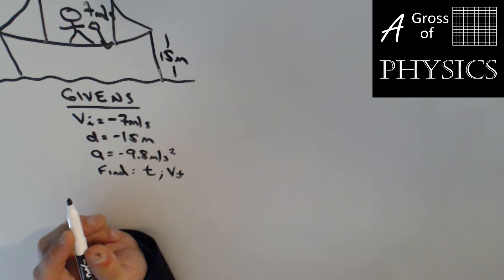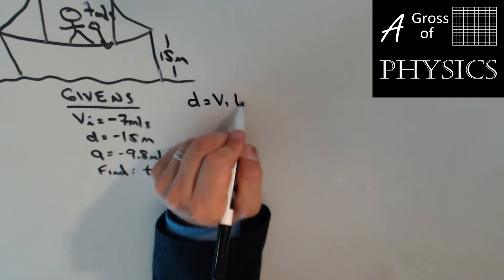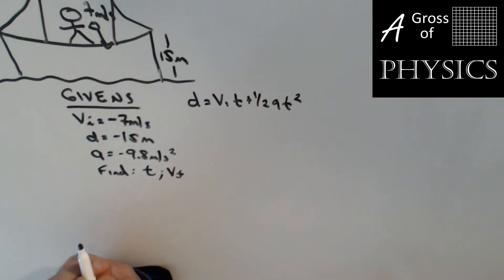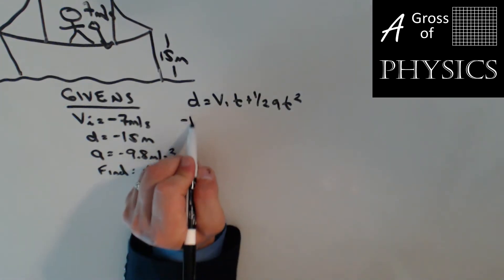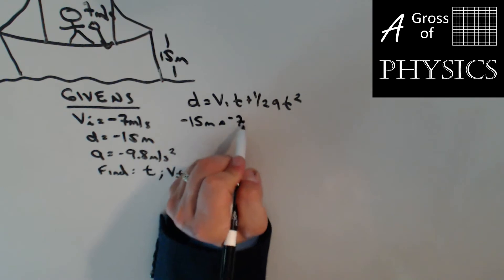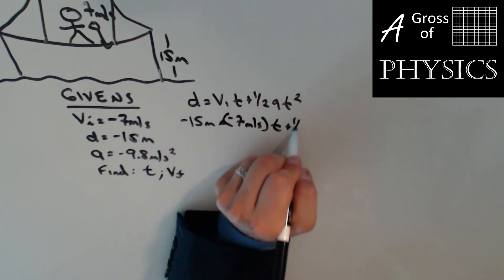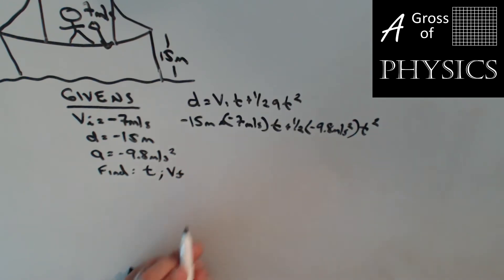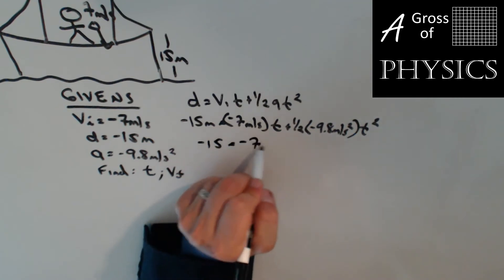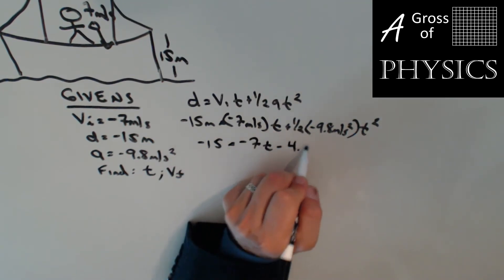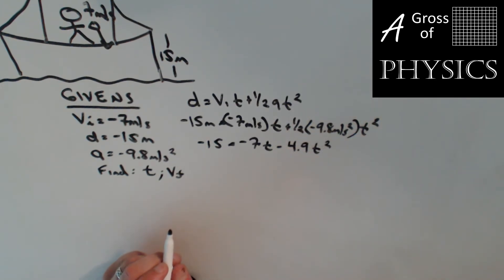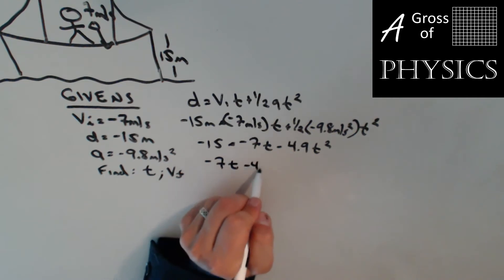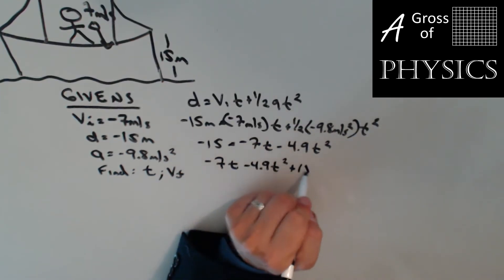Looking at the information we have, we're going to use d equals vi t plus one-half a t squared. When we do that, negative 15 equals negative 7 t plus one-half minus 9.8 t squared. This is shaping up to be a quadratic again. Negative 15 equals negative 7 t minus 4.9 t squared. If we rearrange, we'll get negative 7 t minus 4.9 t squared plus 15 equals zero.